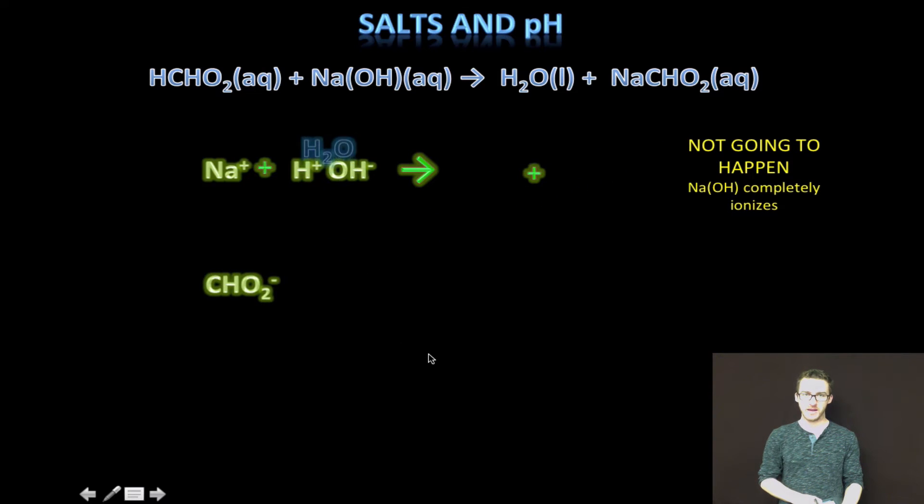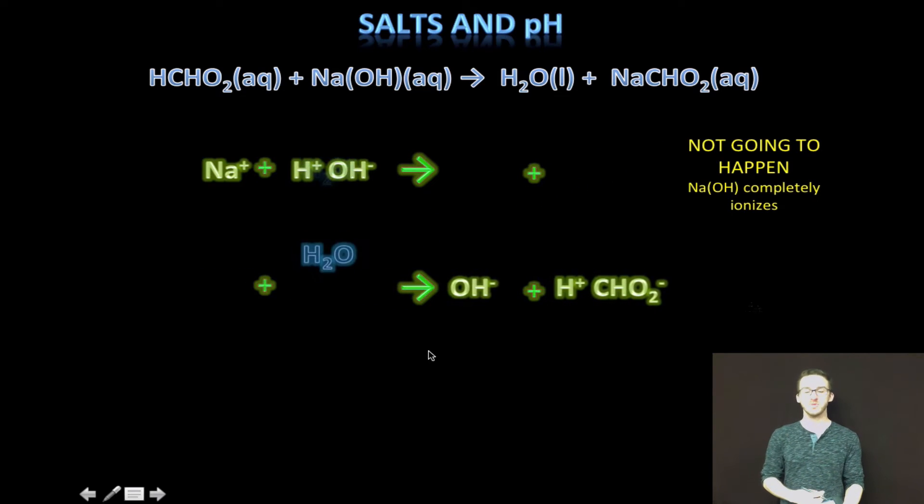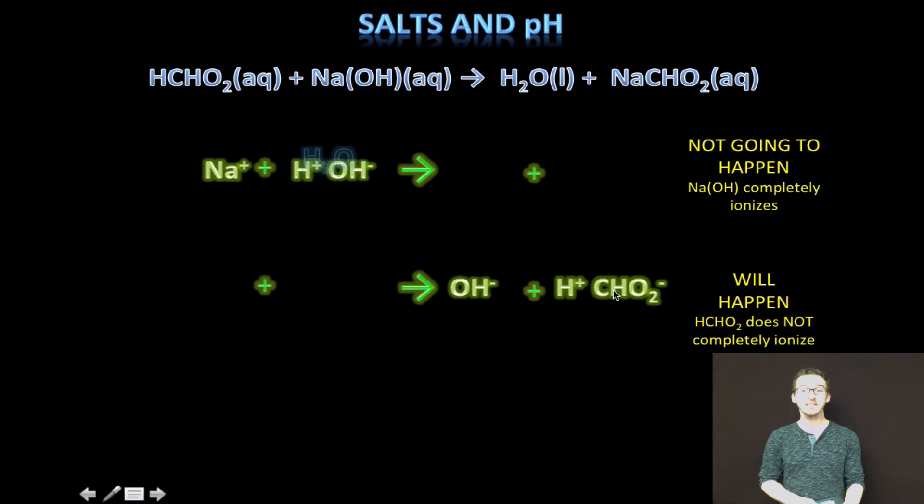The formate ion, on the other hand, it will hydrolyze water. It will split water. And because it's an anion, it's going to hook up with the hydrogen ion to form formic acid and additional hydroxide ion. And this is going to happen because formic acid is a weak acid. And those things, remember, do stay together. They don't tend to ionize. So the first thing you want to do when you're given a question like this is look at the ions in your salt and identify which of the ions is going to act as a weak acid or weak base. In this case, it's the formate ion that's going to act as a weak base because it's going to split water and form additional hydroxide ion.